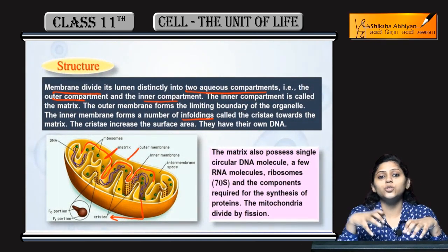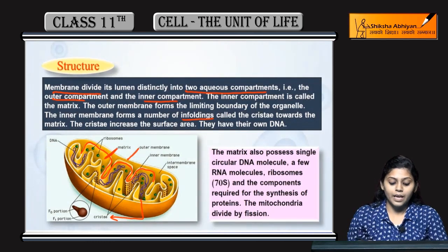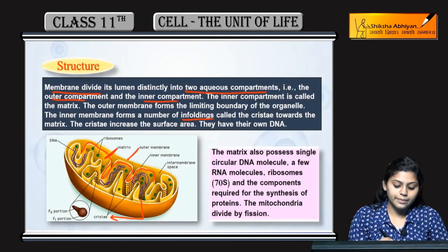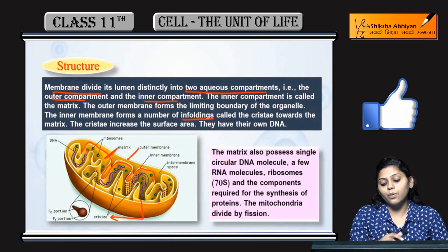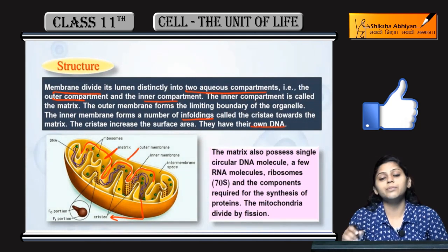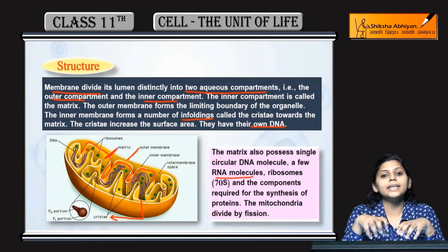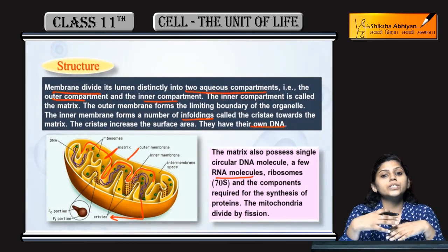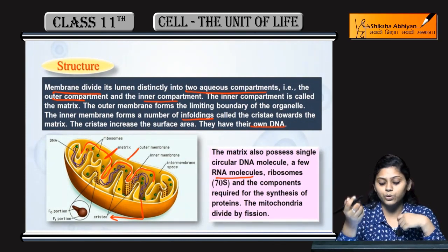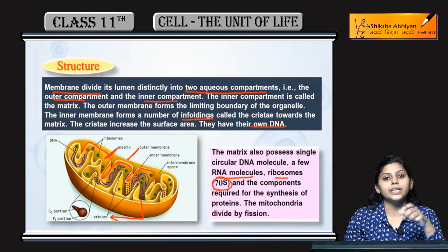Matrix present hota hai, jaise cell ka cytoplasm hota hai, waise matrix jo hai woh mitochondria ka part hai. Ribosomes hota hai. Mitochondria ki ek different property hai - mitochondria mein DNA bhi hota hai, ya phir RNA bhi ho sakti hai. Nucleic acid ya phir genetic material ke present hone ki wajah se, mitochondria ko semi-autonomous body bhi bolte hai ya semi-autonomous organelle bhi bolte hai.